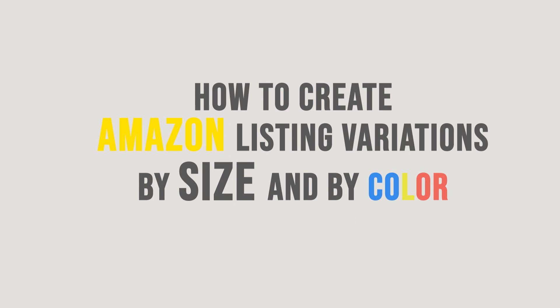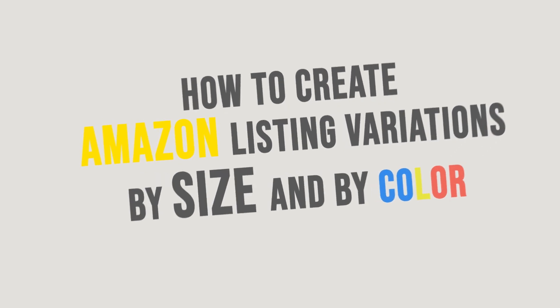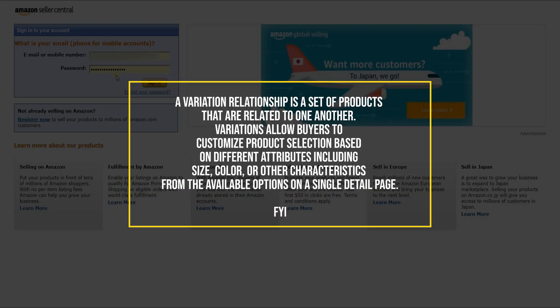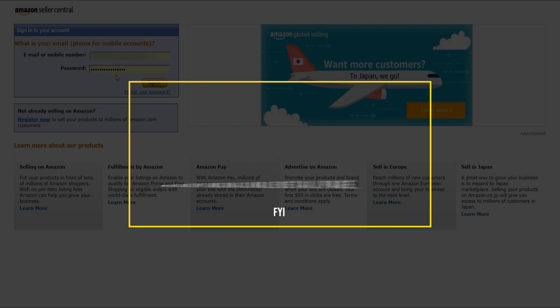Most Amazon sellers sell products with a lot of variety. If you're a new seller on Amazon, there's a lot of things to know. One of these is selling products with variations, such as different colors and sizes. A variation relationship is a set of products that are related to one another. Variations allow buyers to customize product selection based on different attributes, including size and colors, or other characteristics from the available options on a single detail page.